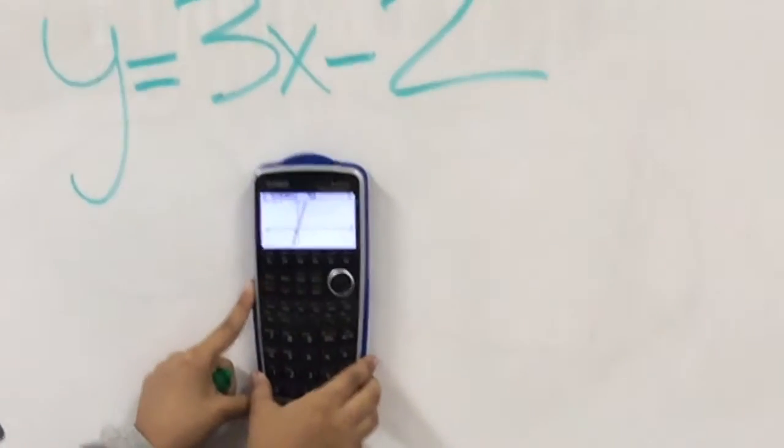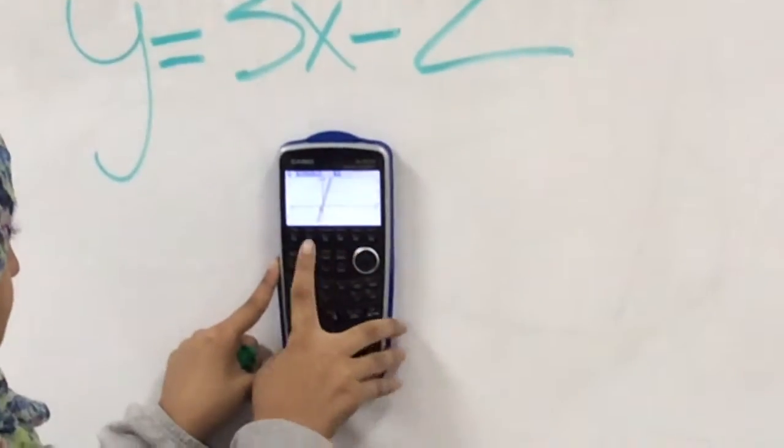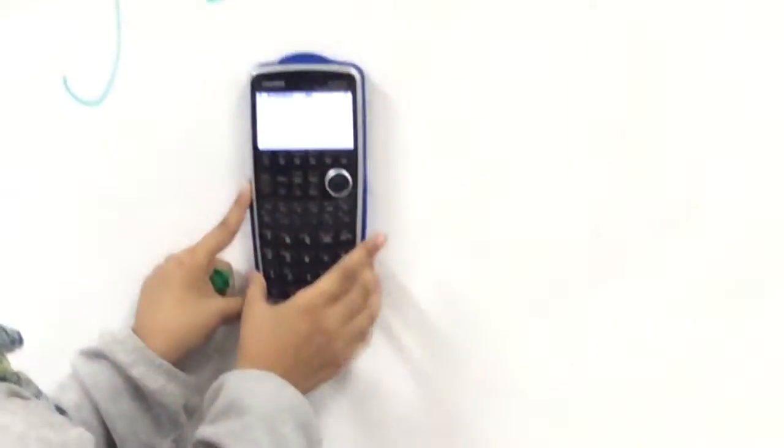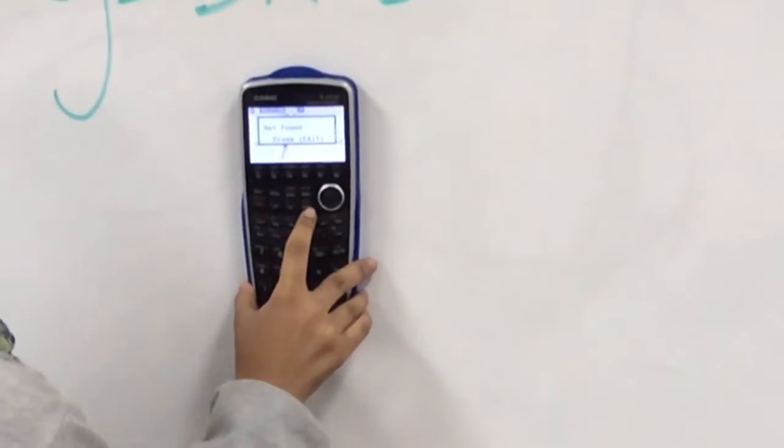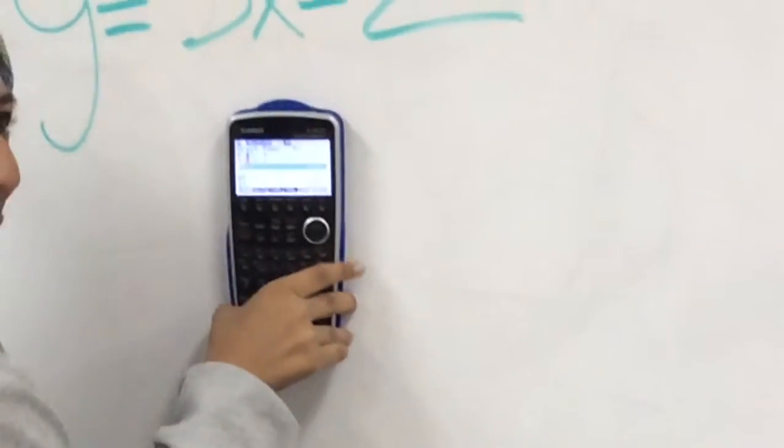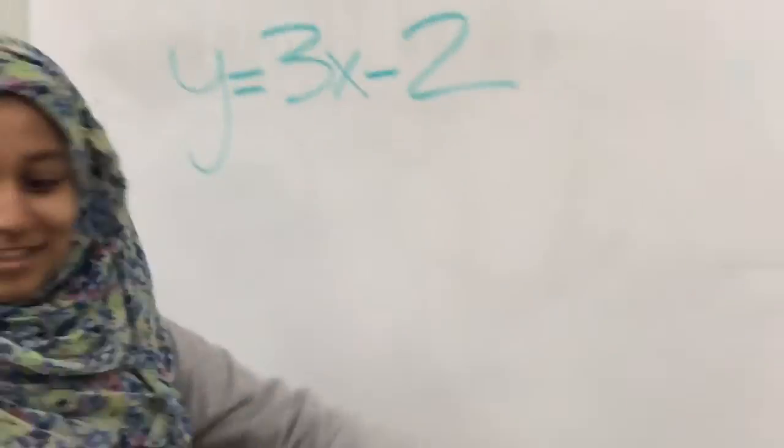She's going to press f5, or shift f5, for the intersection of the graph. And there is none found because the lines were parallel. Done!